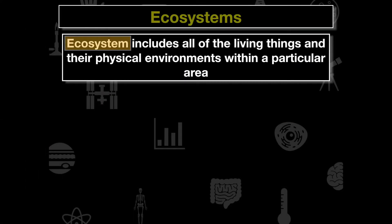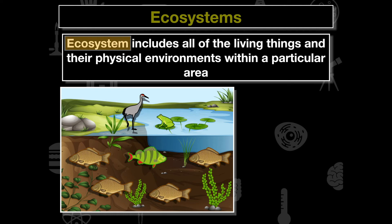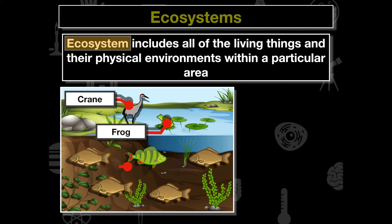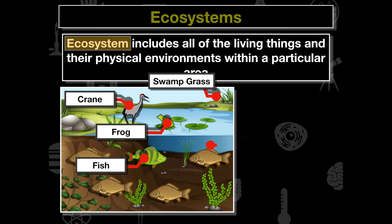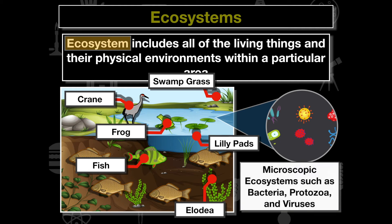An ecosystem includes all the living things within a physical environment in a particular area. Looking at a wetland picture, we see organisms like a crane, a frog, a population of fish, swamp grass, lily pads, and elodea. We also have to think about scale — ecosystems can include microscopic components such as bacteria, protozoa, and viruses existing within that same environment.